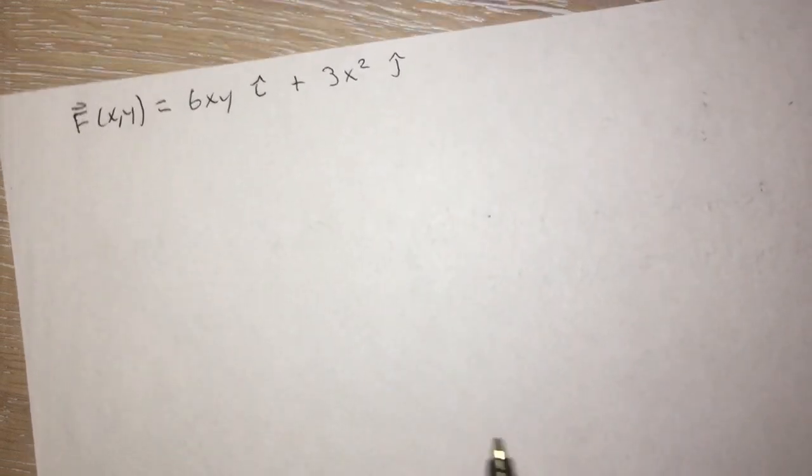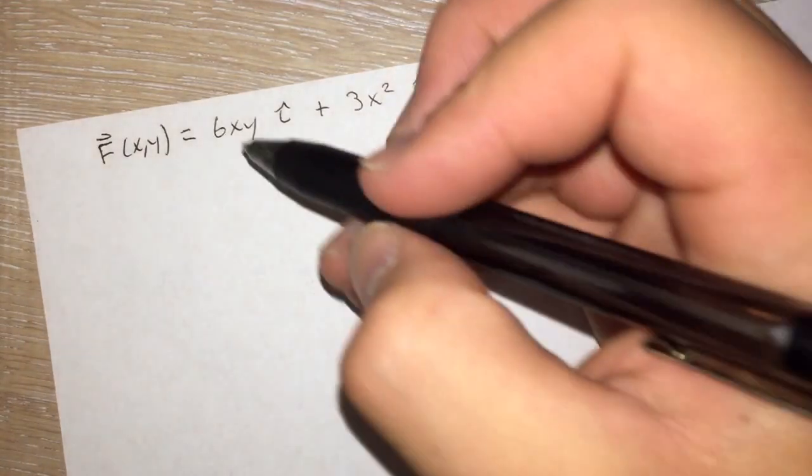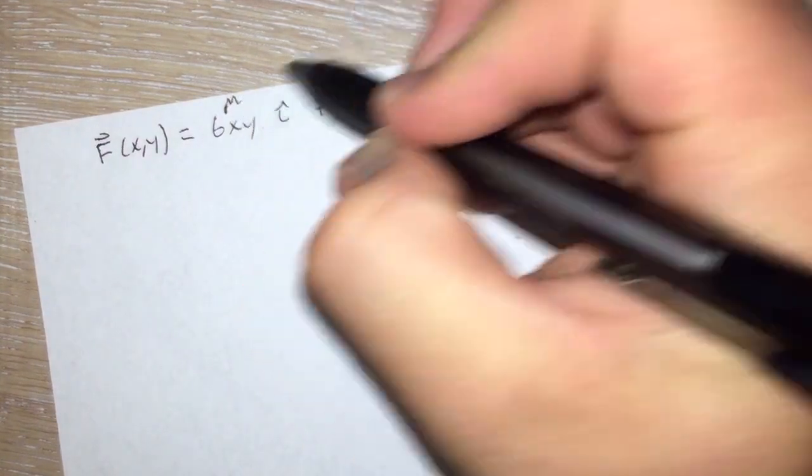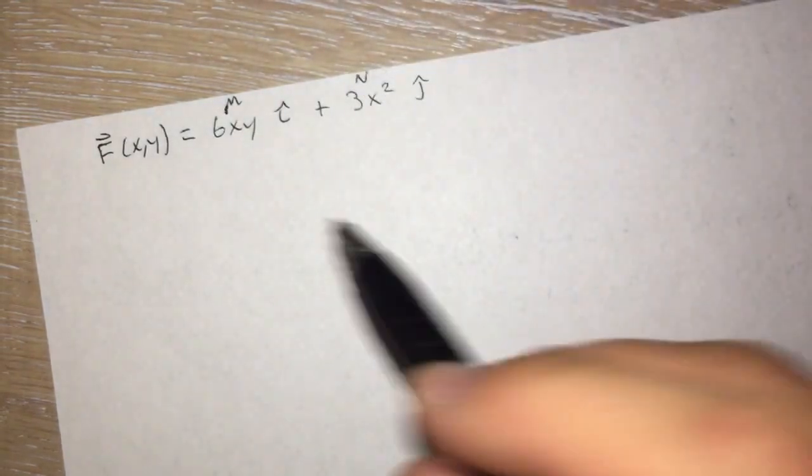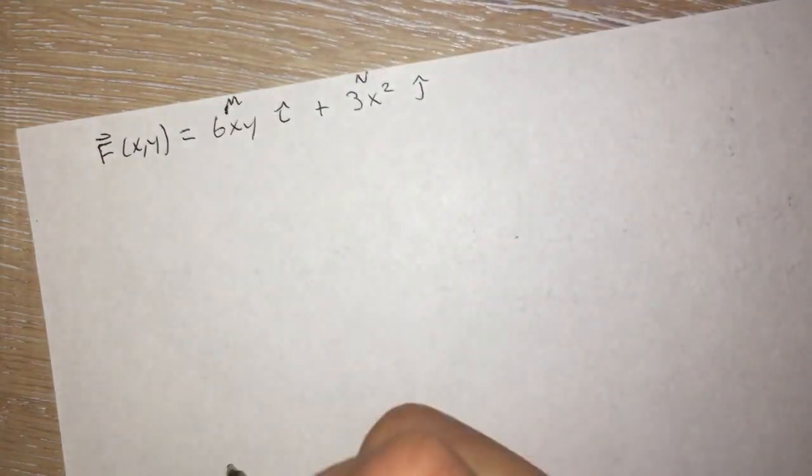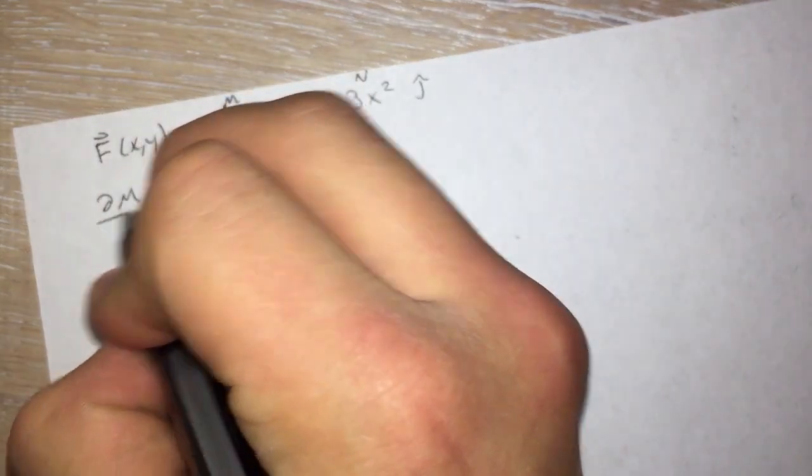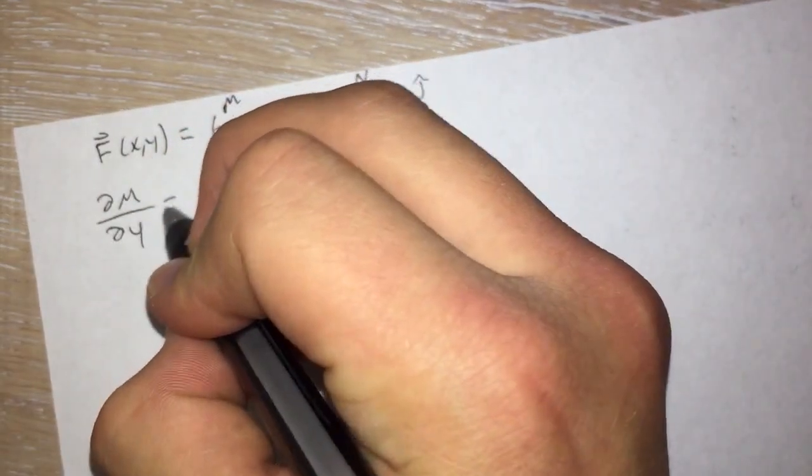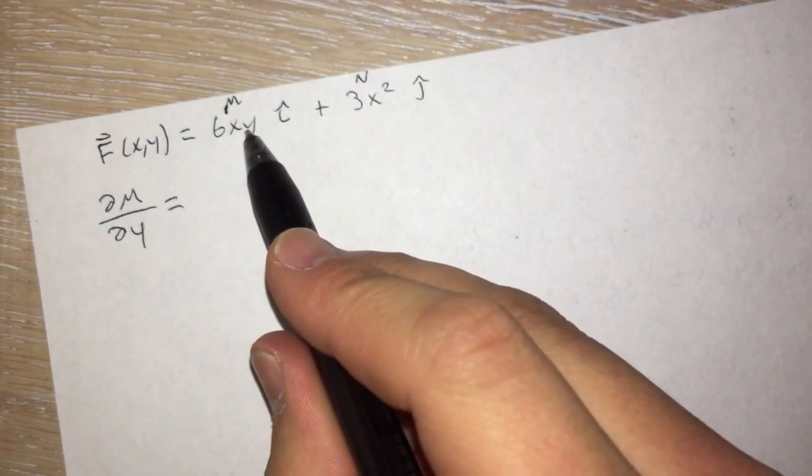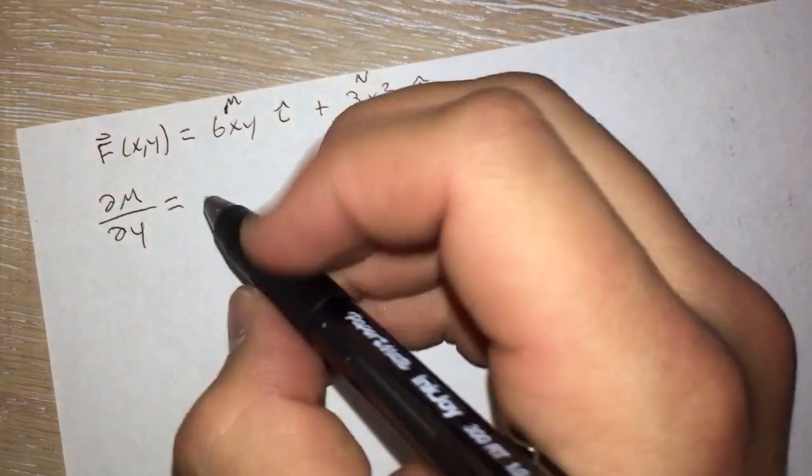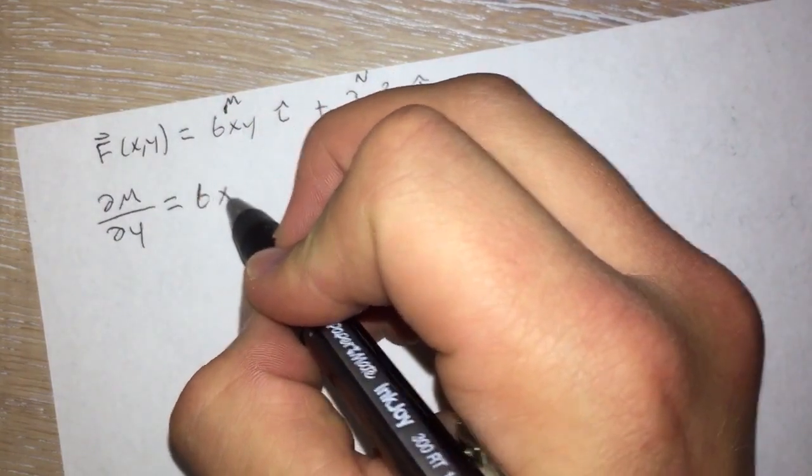To start this off we're going to make sure that this is conservative. So we have our m right here and then our n to represent which groups we'll use. Then we take the partial derivative of m with respect to y. For this the y is going to drop out and you're going to end up with 6x.